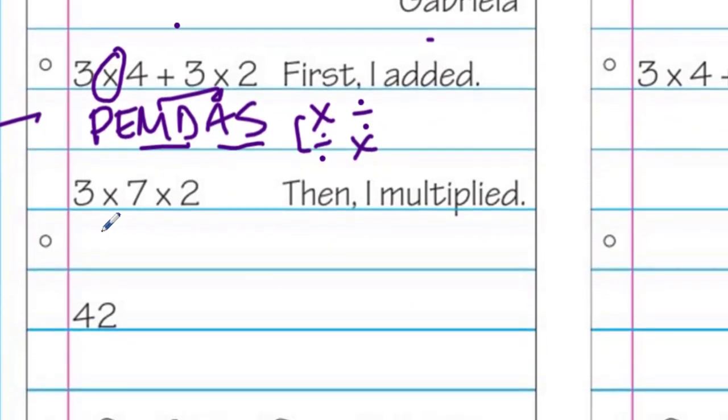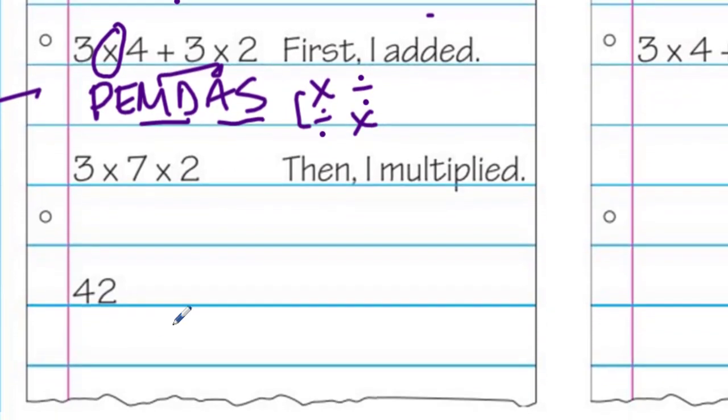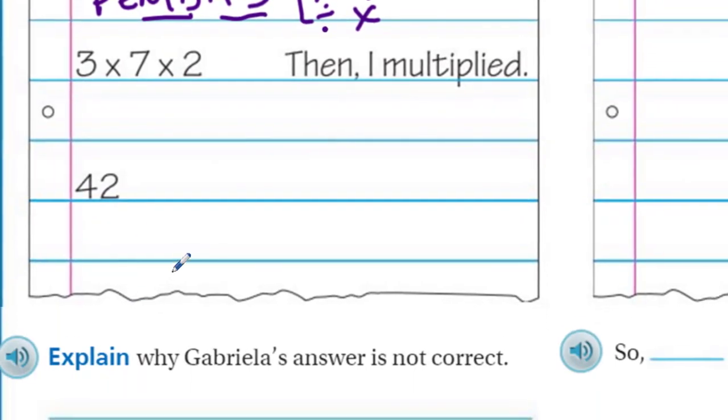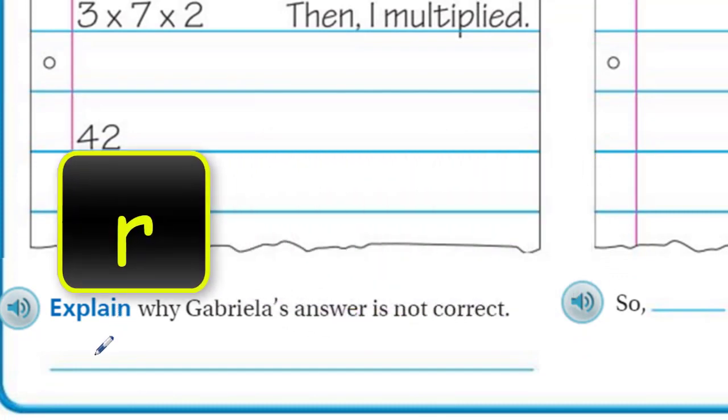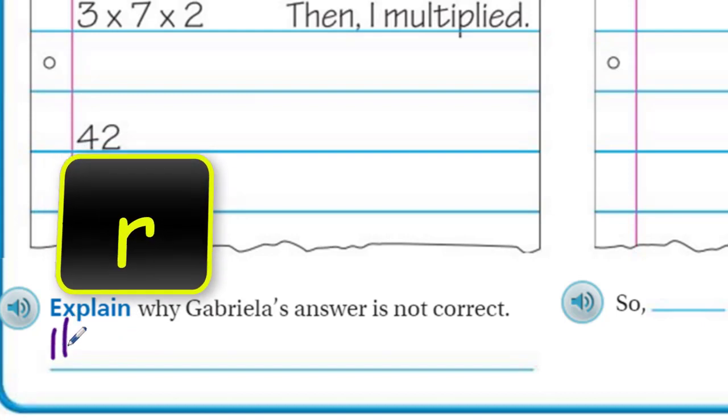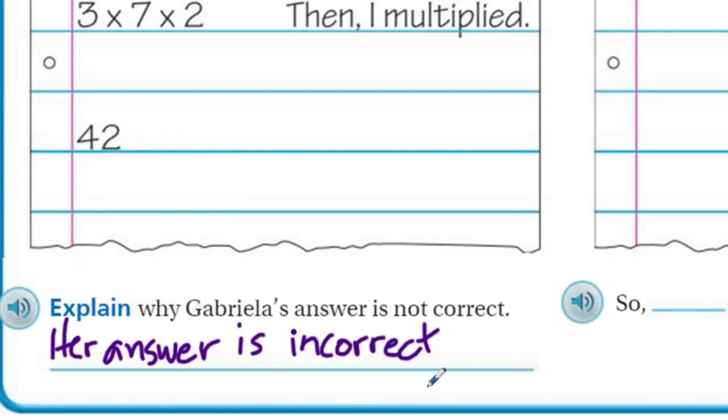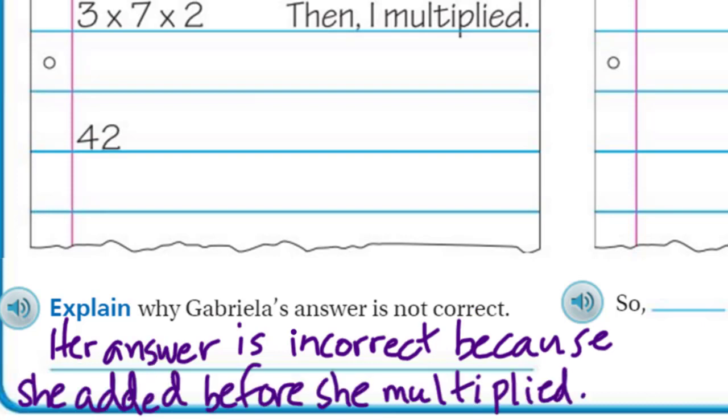Hey, it's okay. It's how we learn. Not even a big deal. So then she multiplied and got 3 times 7 times 2, ending up with 42. So explain why Gabriela's answer is not correct. Her answer is incorrect because she added before she multiplied. Simple as that, my friends.